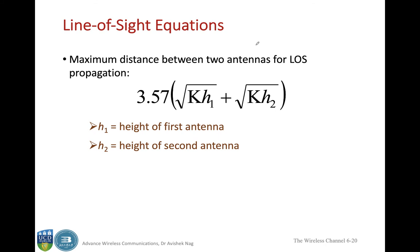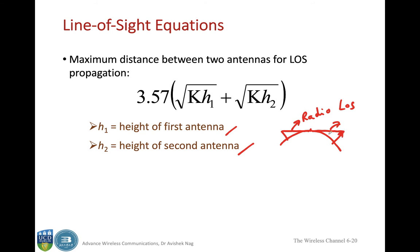The maximum distance between two antennas for line of sight propagation is given by the sum of the radio horizon distances of each antenna, where h1 is the height of the first antenna and h2 is the height of the second antenna. When a line of sight between the two antennas just touches the surface of the earth, that is the limiting case, and the total distance is the sum of the two individual radio horizon distances.